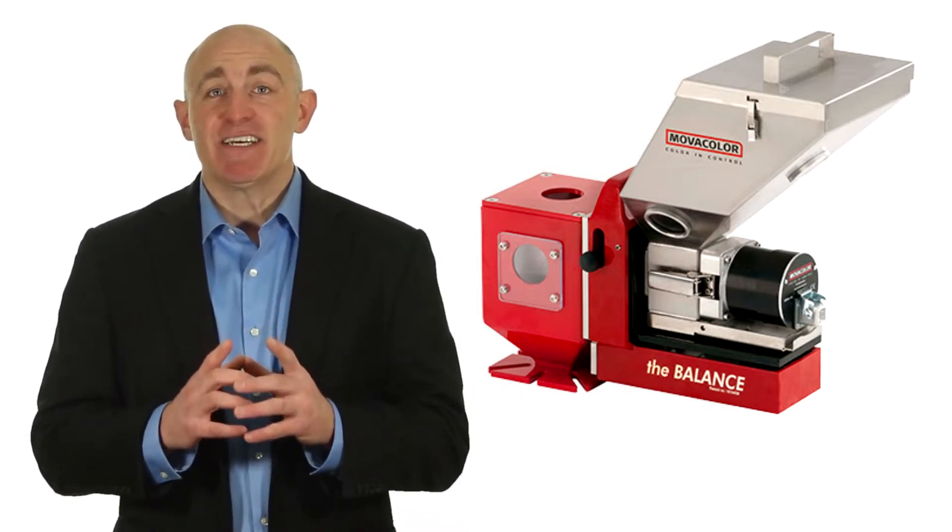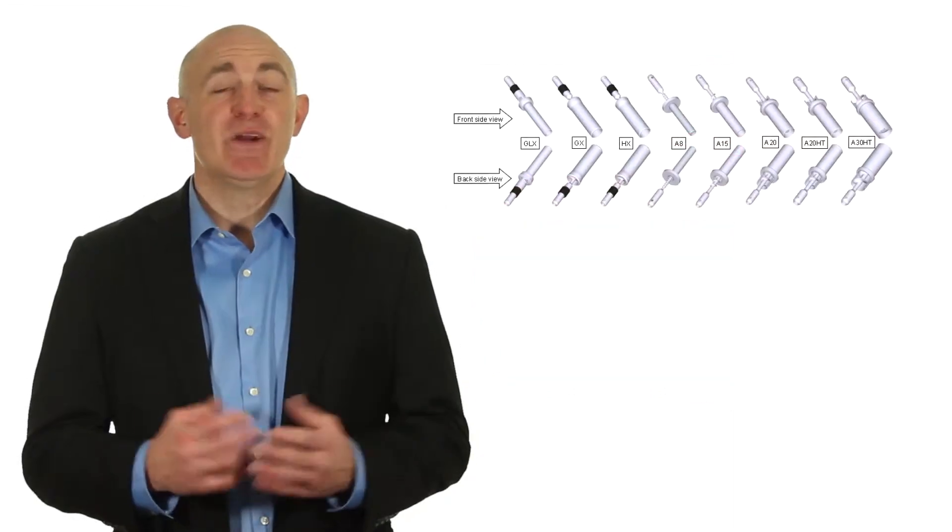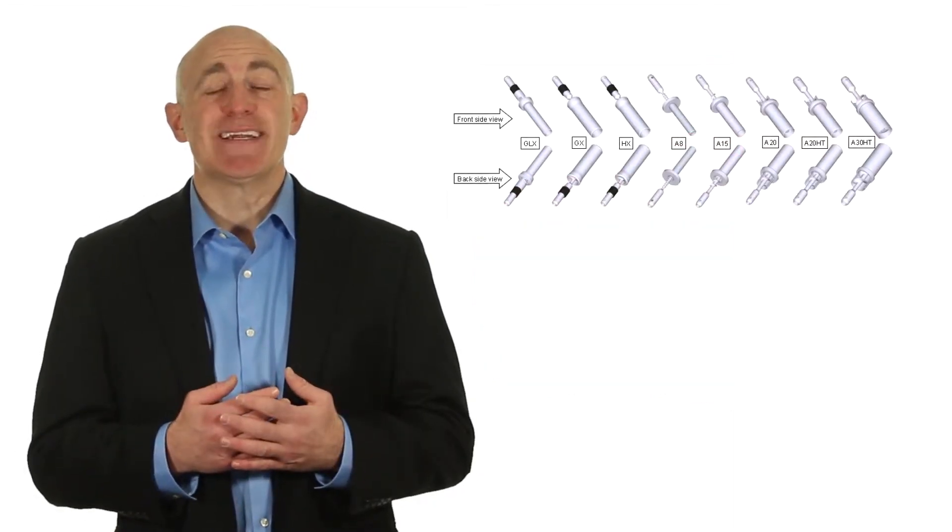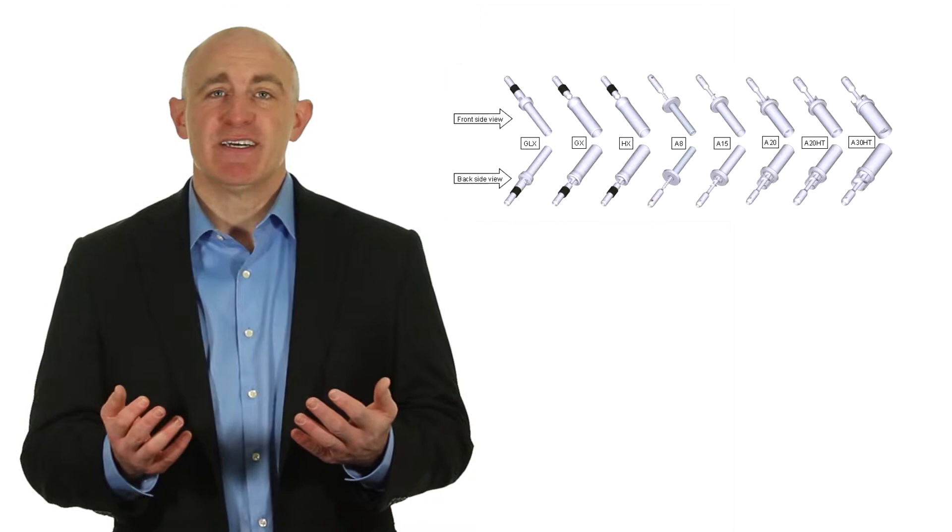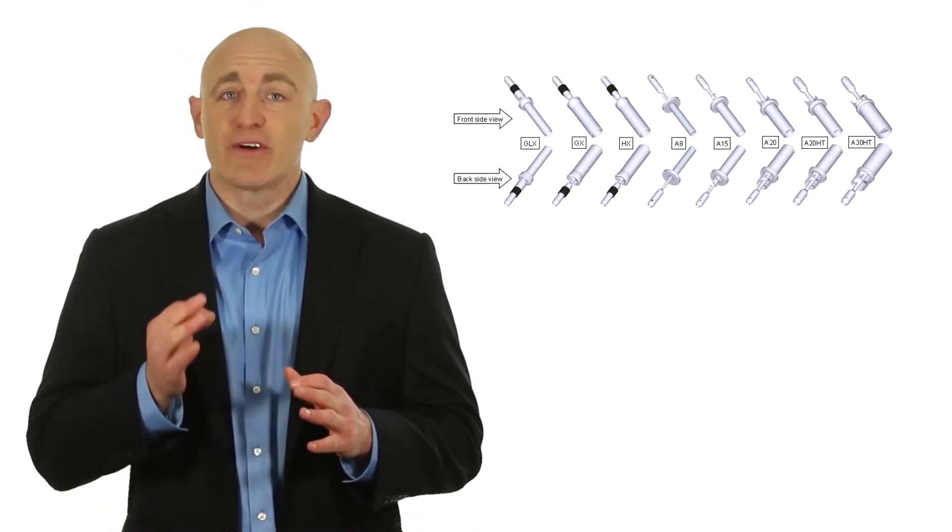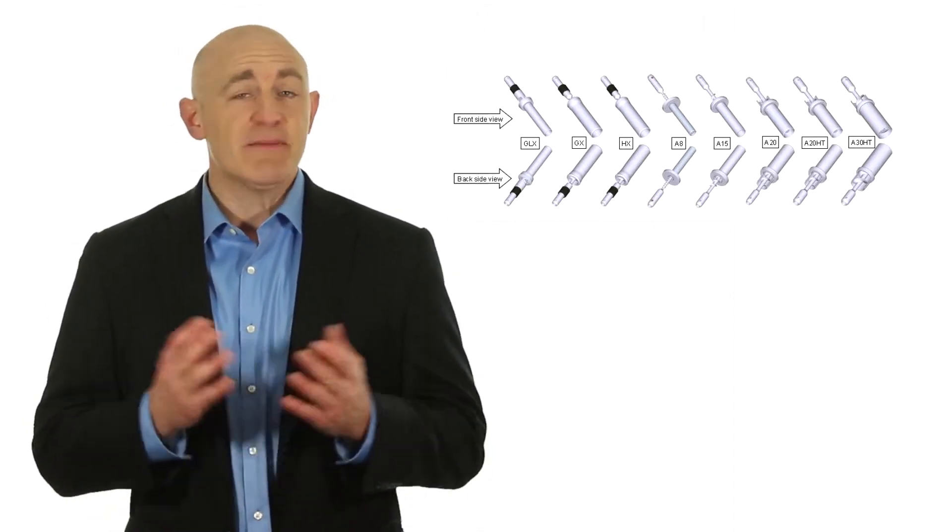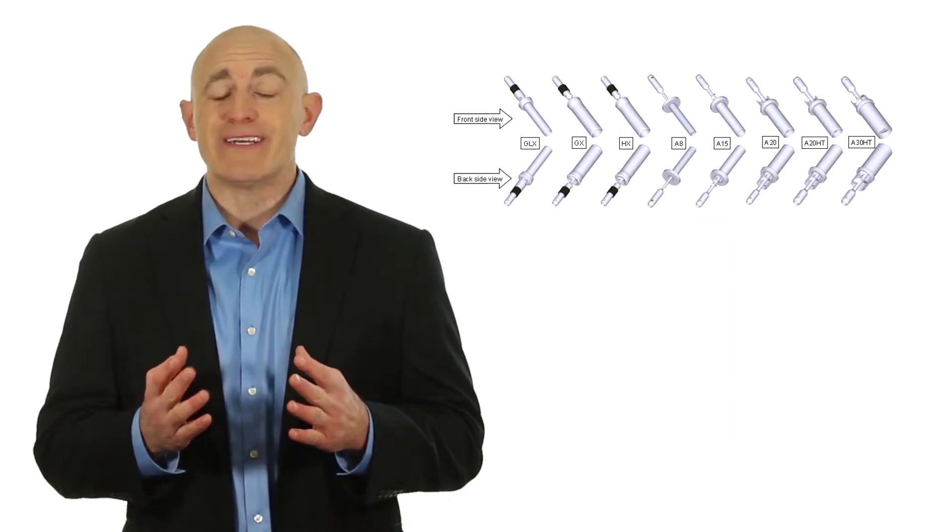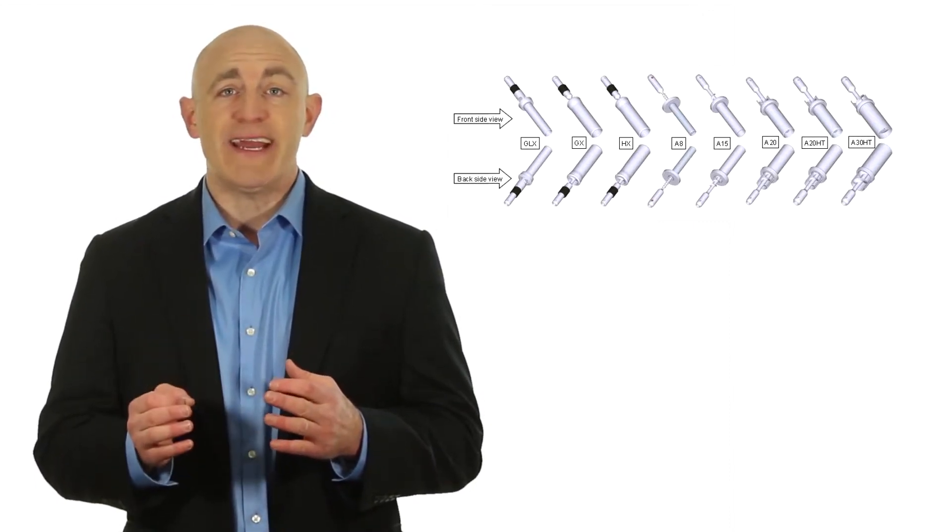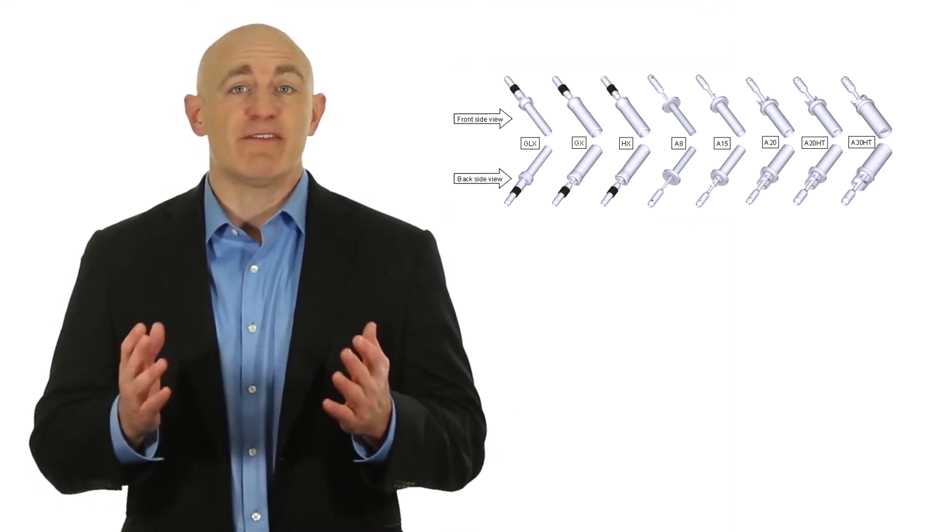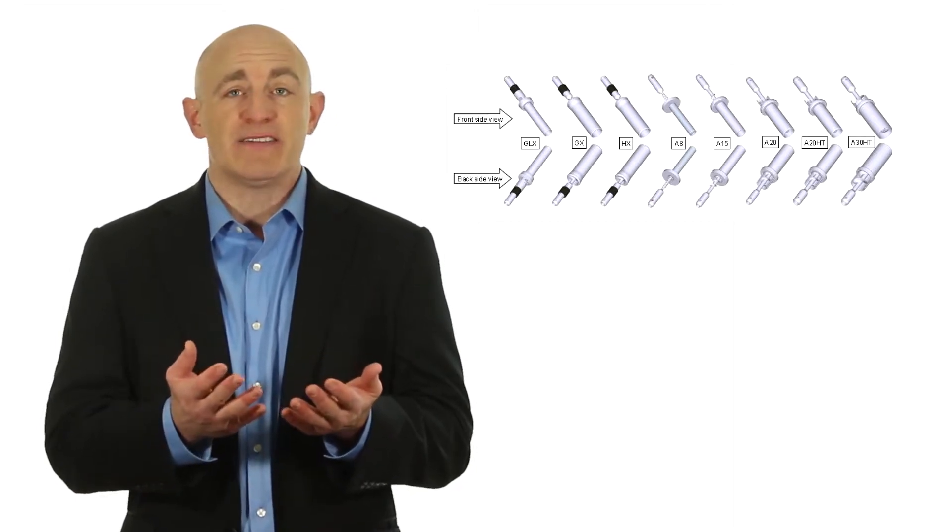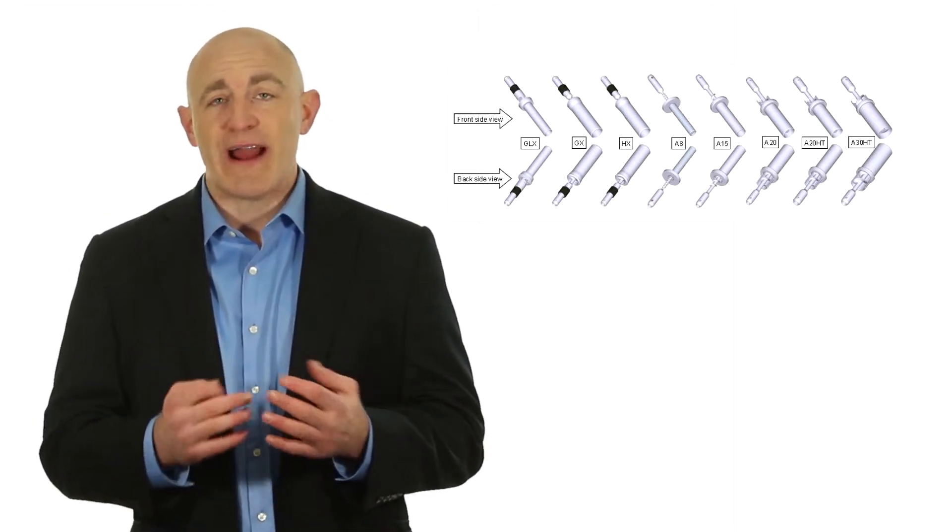We offer 16 different dosing tools that include cylinders and screws. Every one of them is a solution for a specific application. Some feeder manufacturers only offer as few as two size screws and apply them for everything from a machine processing a few pounds to thousands of pounds per hour.